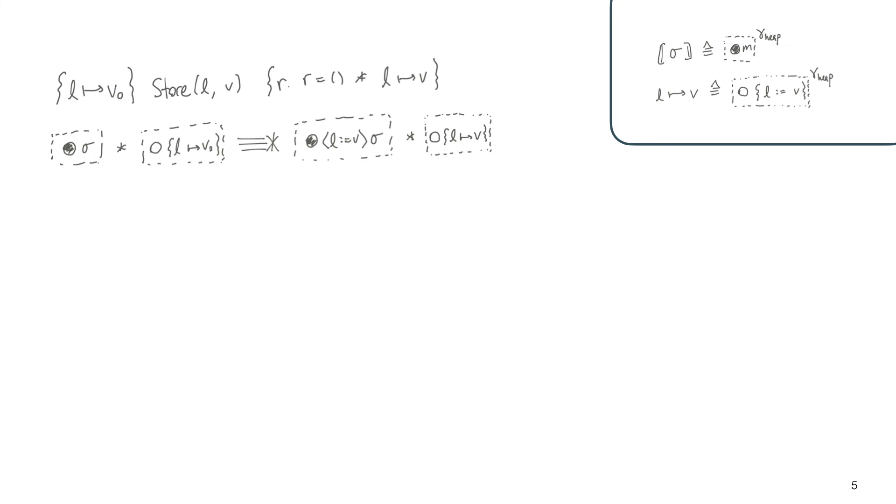One comes from the state interpretation, which recall is just ownership of the authoritative element of the RA. And the other component comes from the precondition, which is ownership of this singleton fragment within the same ghost resource.